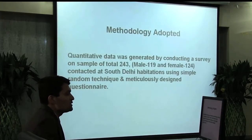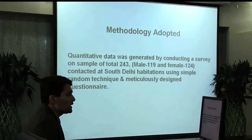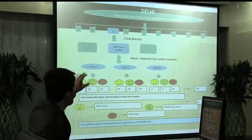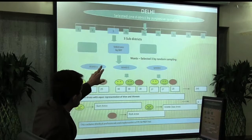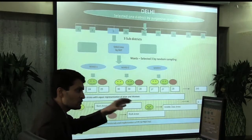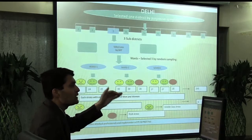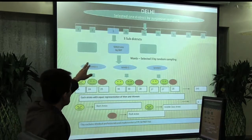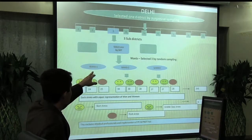Regarding methodology adopted: quantitative data was generated by conducting a survey on a sample of 243 respondents — 119 male and 124 female — contacted at South Delhi habitations using simple random technique and meticulously designed questionnaires. In Delhi, I selected one district by purposive sampling. I chose the southwest district of Delhi because it is one of the most prosperous districts, with a high standard of living and high levels of education.